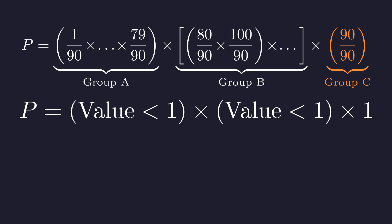So, we are multiplying a number less than 1 by another number less than 1 by 1. The inescapable conclusion is that the entire product P must be less than 1. The exponential wins.